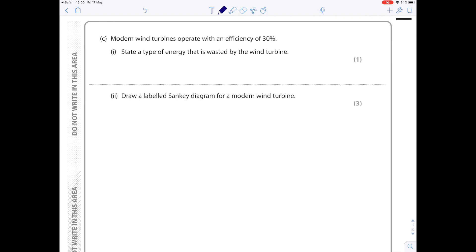Right, drawing Sankey diagrams, again something else which people aren't too keen on doing. So modern wind turbines operate with an efficiency of 30%. Draw a labeled Sankey diagram for a modern wind turbine. So remember, Sankey diagrams basically show efficiency as a diagram which states that useful energy out divided by total energy in times by 100. So going into our Sankey diagram, we need to have our total energy in. We haven't been given any specific numbers here, so that will be 100%.